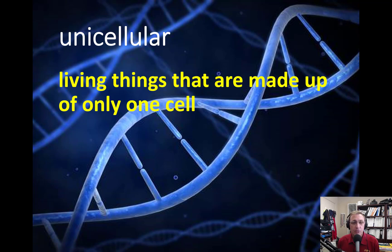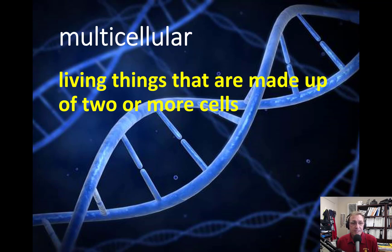Unicellular organism. These are living things that are made up of only one cell. Within that one cell, they have different structures in the cell that perform all the functions that are necessary for life for that cell. Unicellular, one, like a unicycle, just one cell. Multicellular, living things that are made up of two or more cells. Pretty self-explanatory. Multi is more than one.